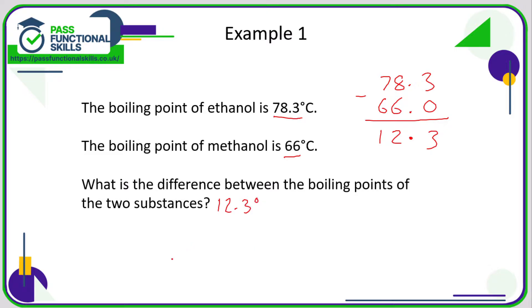Another way you could do this is count up from 66 to 78.3, and I'd use some nice convenient stepping stones on the way like 70 and 78. So the difference between 66 and 70 is four degrees.